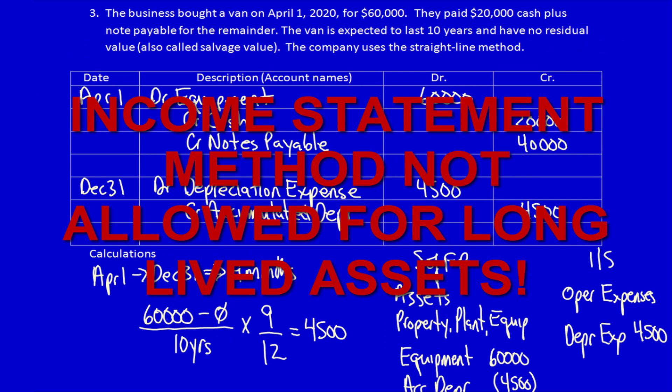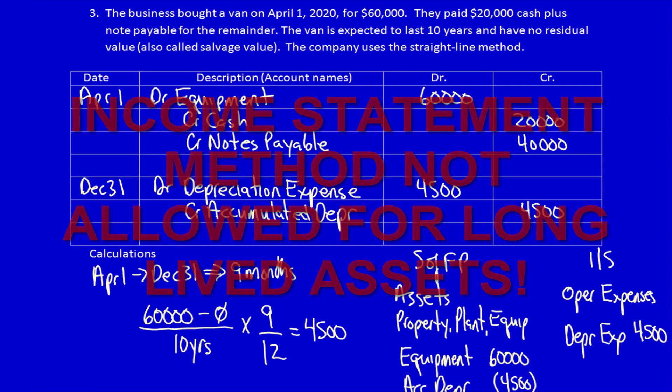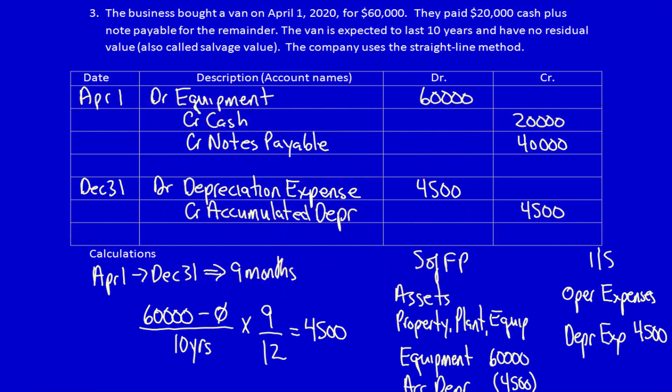But you cannot ever use the income statement method for long-lived assets. That includes buildings, equipment, furniture and fixtures, software, and intangibles. No long-lived assets can use the income statement method. What I'm showing you here is the balance sheet method from a previous video. Don't ever attempt to use the income statement method for any long-lived assets — it's not permitted and it doesn't make sense.